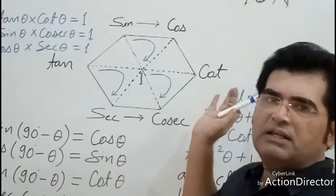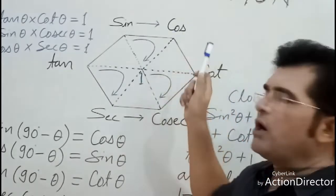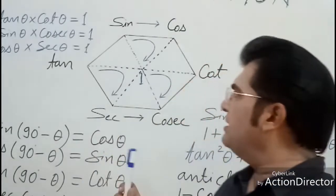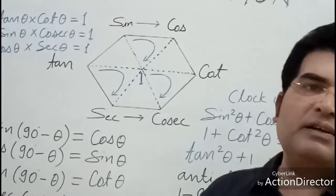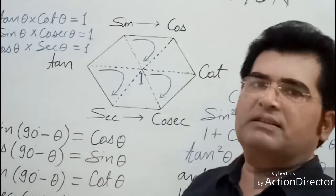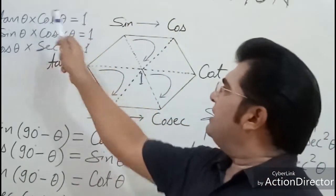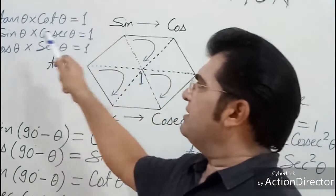You have to remember on the left side you have tan and sin, and on the right side you have all the co-functions: cos, cot, and cosec. Now, how can we make trigonometric identities with the help of this hexagon? You see here, tan times cot equals one, sin times cosec equals one.